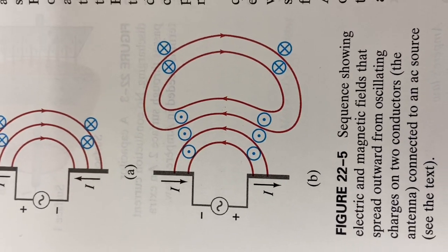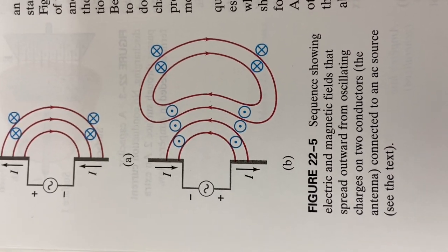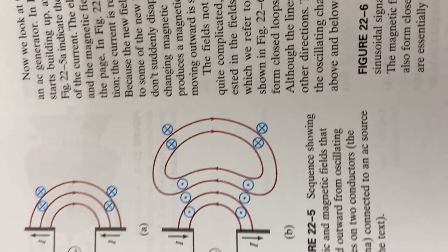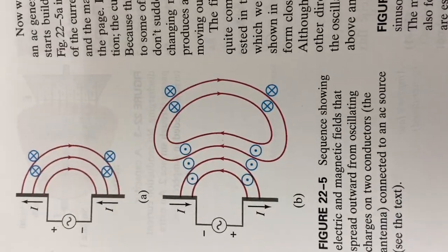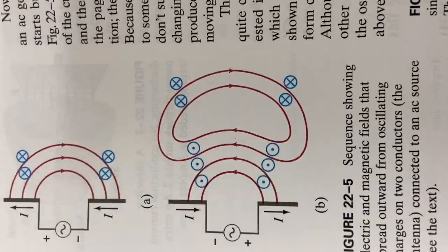Because you're going to be going from electric field up to electric field down to electric field up to electric field down, magnetic field in to magnetic field out to magnetic field in to magnetic field out.